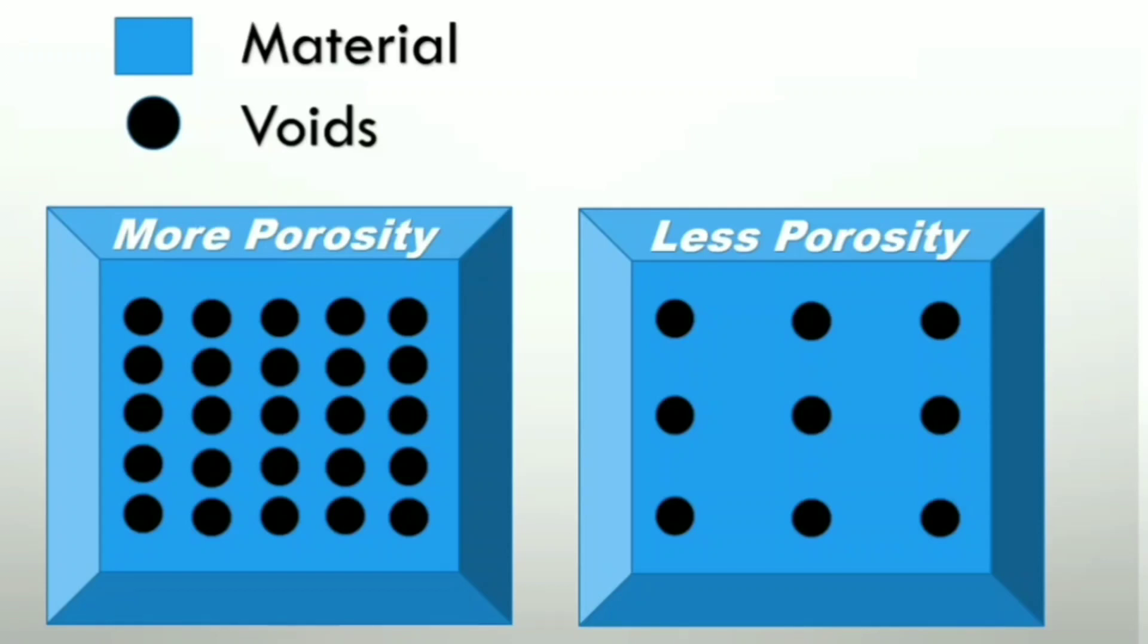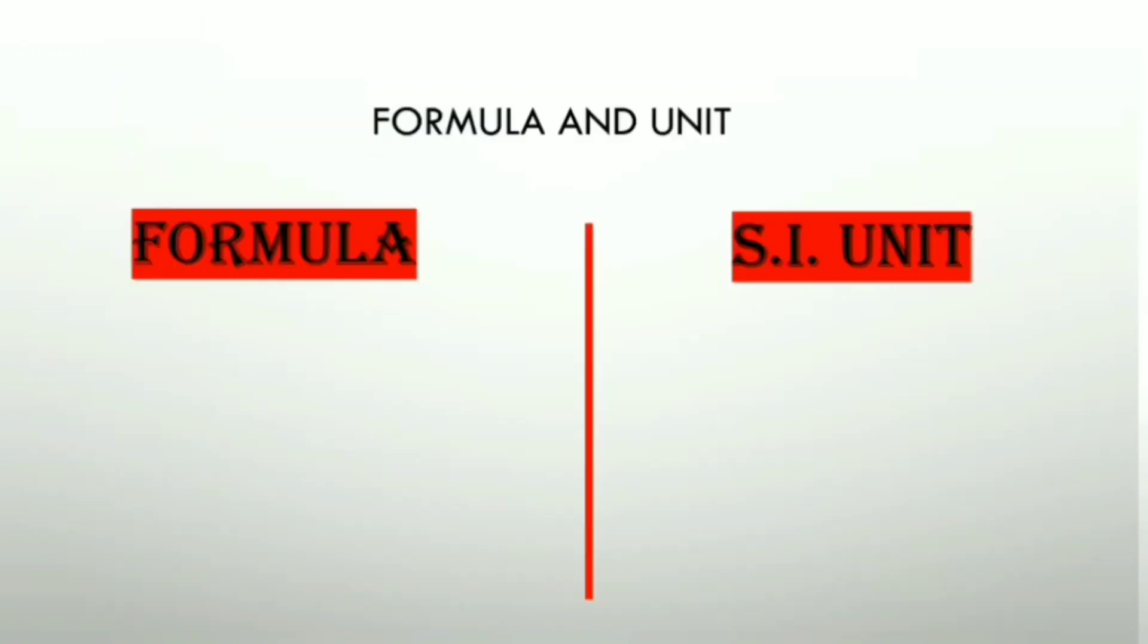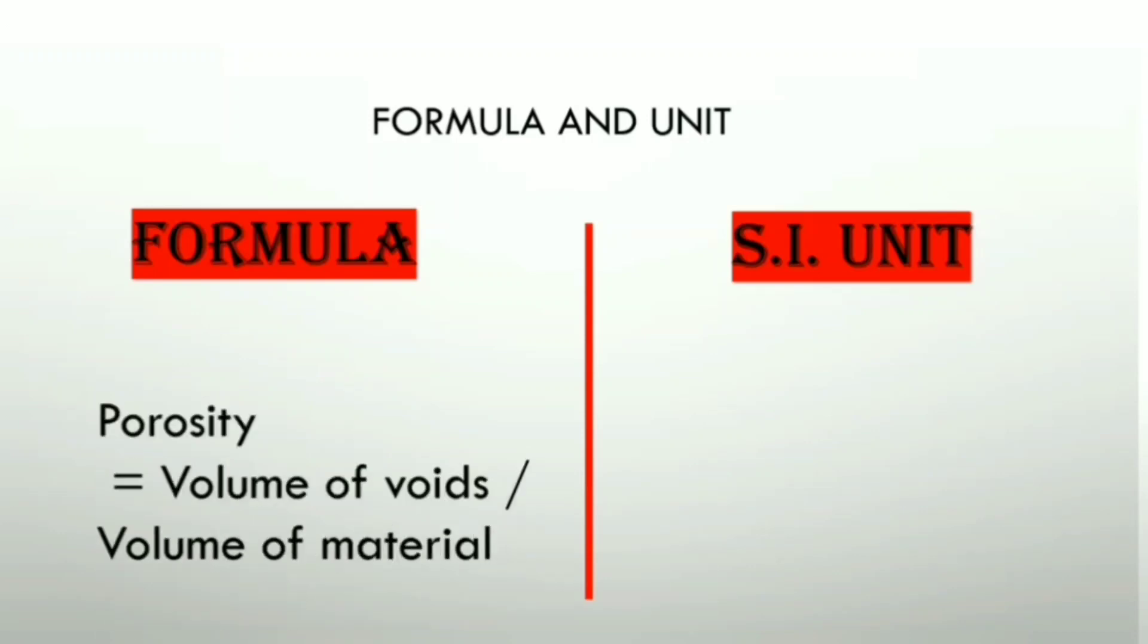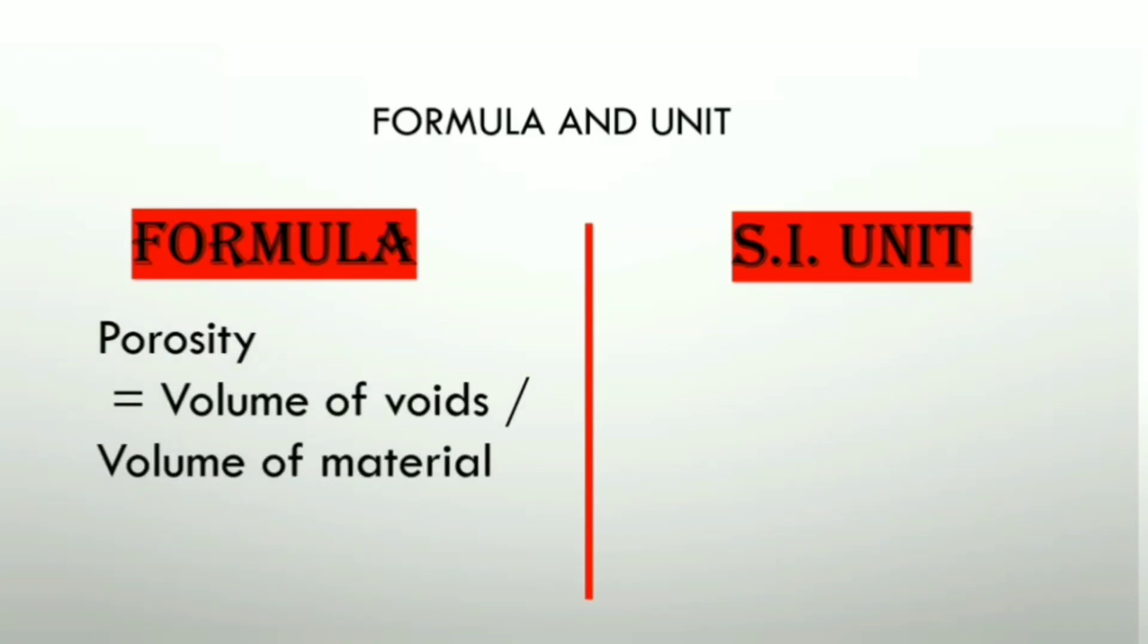compared to that on the right one. Now if we talk about the formula and unit, the formula is: porosity is equal to volume of voids upon volume of material, and symbolically it is represented by small n is equal